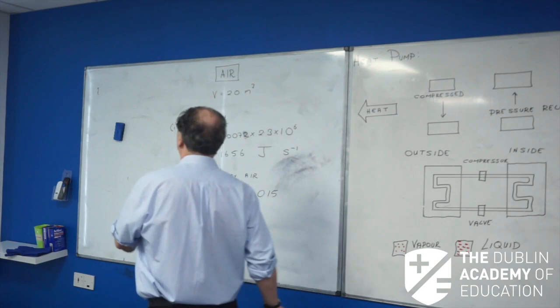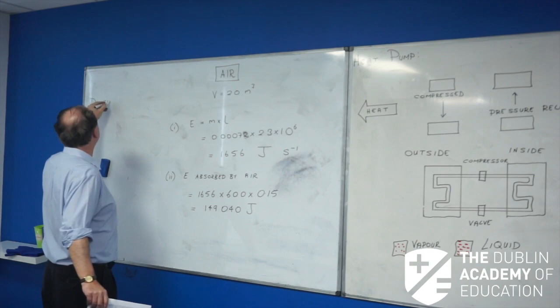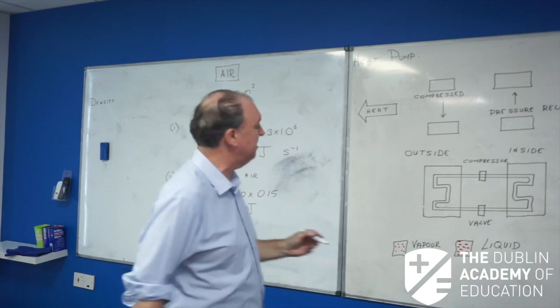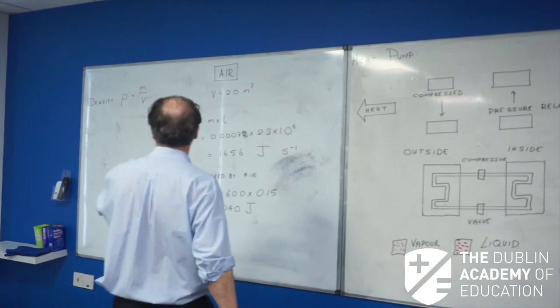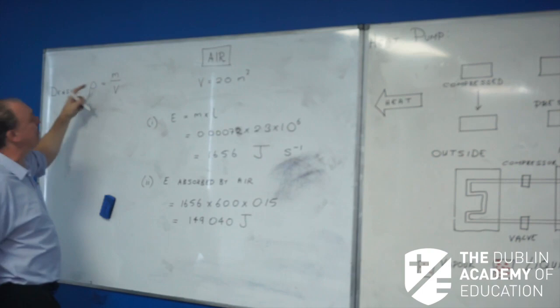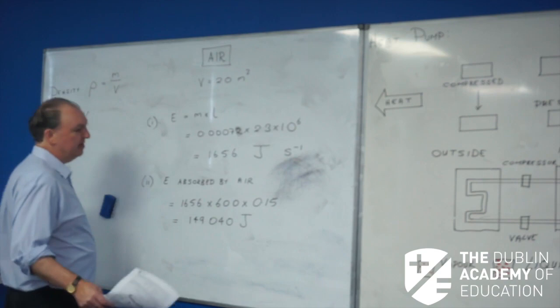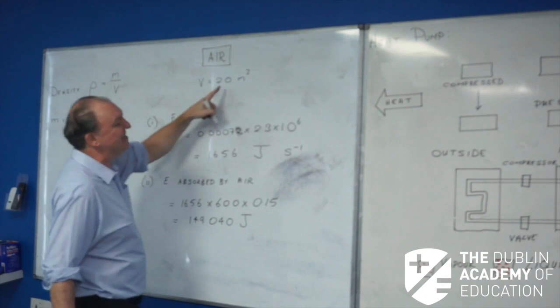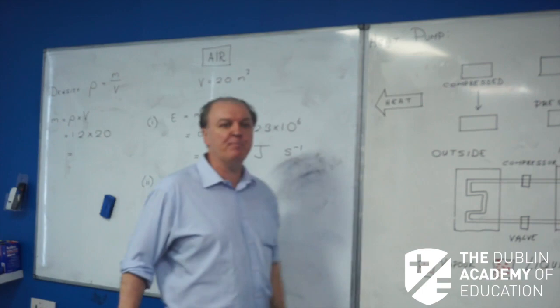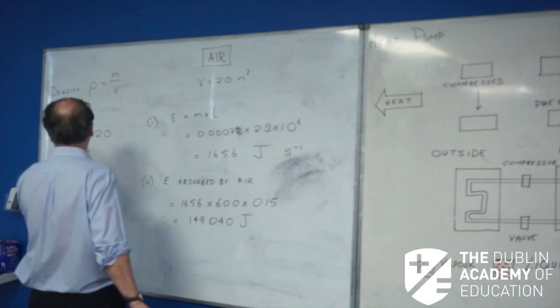Density, as you may know from your junior cert, is mass divided by volume. The symbol I use for density is rho. So rho is M divided by V. Mass is equal to rho multiplied by V. The density of air is 1.2 kilograms per meters cubed. The volume is 20 meters cubed. Multiplying 1.2 by 20, and I get 24 kilograms. Now I have the mass of the air in the kitchen.